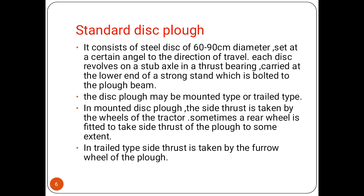The standard disk plow consists of steel disks of 60 to 90 centimeter diameter set at a certain angle to the direction of travel. Each disk revolves on a stub axle in thrust bearings carried at the lower end of a strong standard bolted to the plow beam. The disk plow may be mounted type or trail type. In mounted type, the side thrust is taken by the wheels of the tractor, and sometimes the rear wheel is fitted to take side thrust. In trail type, side thrust is taken by the furrow wheel of the plow.